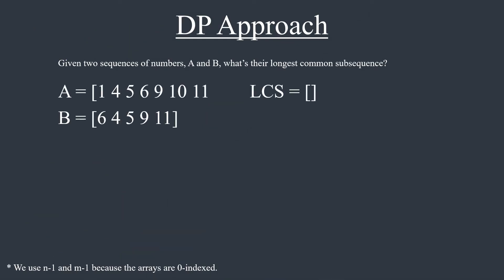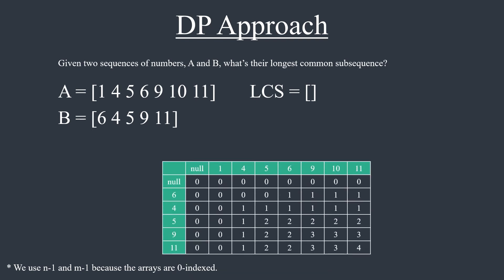The idea behind reconstruction is to start from the final solution and visit subproblems that lead to the optimal answer. Let's go back to our example. The final solution is L[7,5]. The element 11 is the same in both arrays at indexes 6 and 4, so we know it's in the longest common subsequence. Let's store it and go to the previous subproblem.